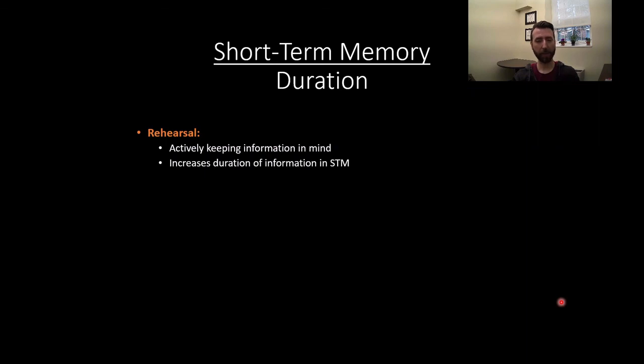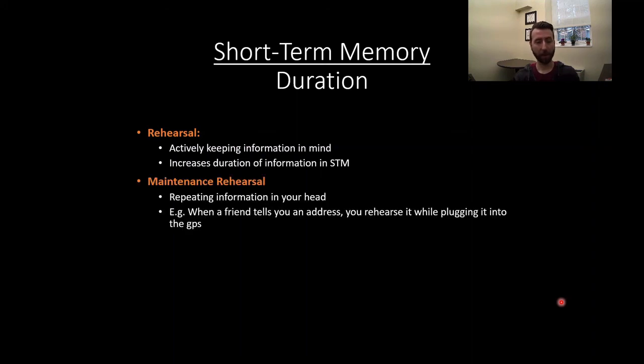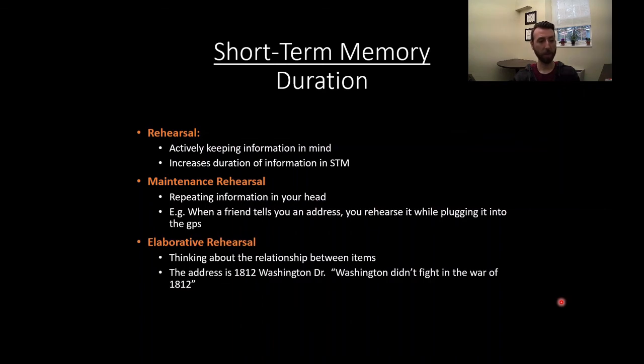So what can we do about that? We can improve the duration that items remain in our short term memory via rehearsal. Rehearsal is what we can do to actively keep information in mind, to increase the duration of information's time in our short term memory. So there's two real ways of doing this. There's maintenance rehearsal, which is just repeating information in your head. So if, for example, your friend gives you an address and you're trying to plug that into your phone, you might have to repeat that in your head until you're able to draw your phone out and open up the right app. You have to keep that in mind. So to do that, you might just repeat the address in your head over and over again.